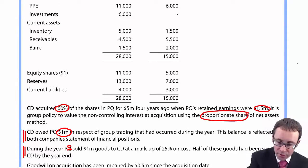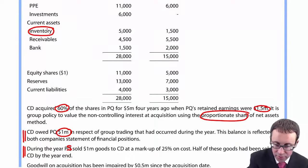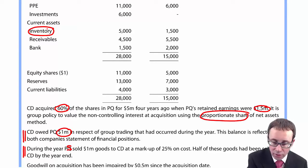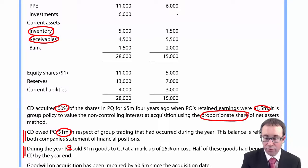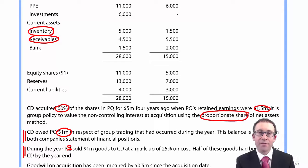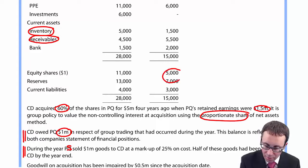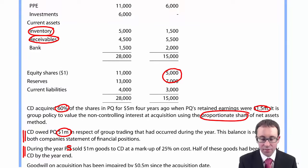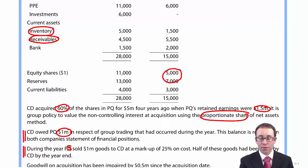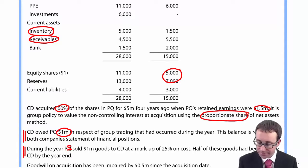Looking at the balance sheet figures for inventory and receivables: there are inventory figures of 5,000 and 1,500. On the receivables side, there are figures of 4,500 and 5,500, which we'll add across and consolidate. And then you've got the equity of the subsidiary, which will go into your net assets working.